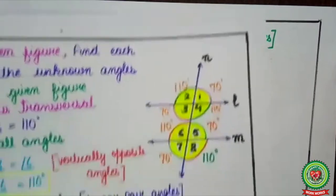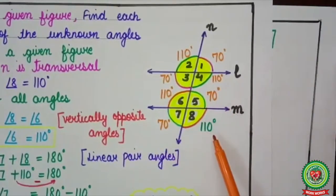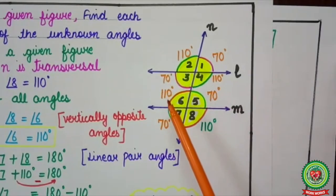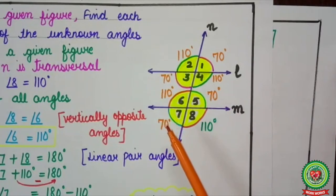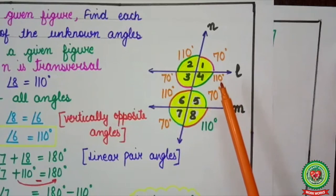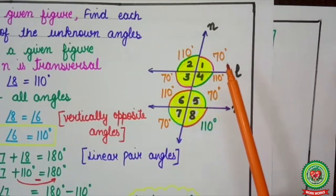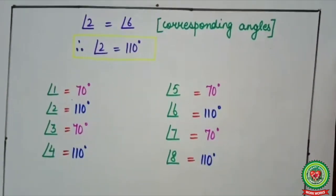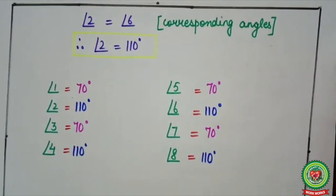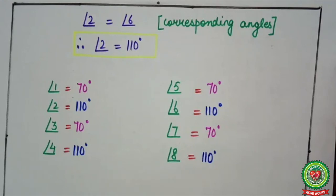So students, here we have found out all the angles. Angle 8 was given as 110°, angle 6 = 110°, angle 7 = 70°, angle 5 = 70°, angle 4 = 110°, angle 3 = 70°, angle 2 = 110°, and angle 1 = 70°. With this, you all have understood how to find all the unknown angles on parallel lines when a transversal cuts two parallel lines. I hope you will be able to solve the related sums given in your SNAP homework. Thank you. Have a nice day.